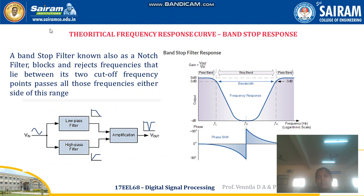Now we are going to discuss about the band stop response characteristics curve. From 0 to FL it will allow the signal to pass — that is the pass band. From FL to FH it will not allow any signal to pass — that is the stop band. From FH to the next frequency it will allow the signal to pass. This is the band stop response characteristics curve.